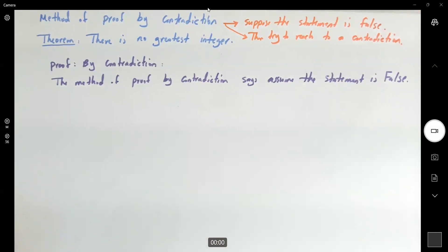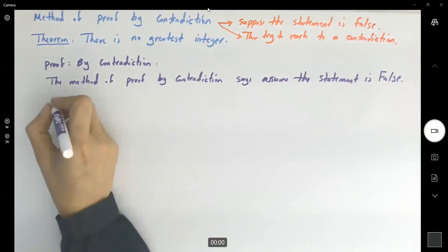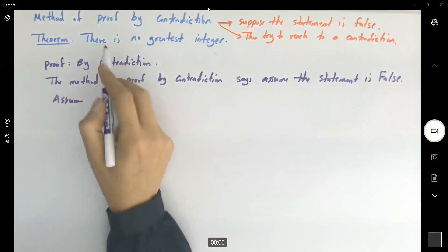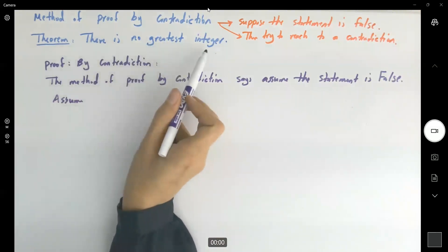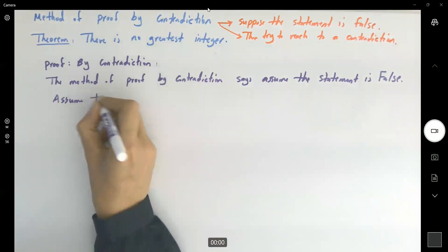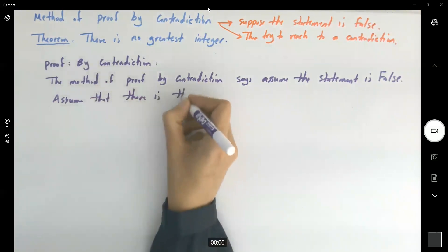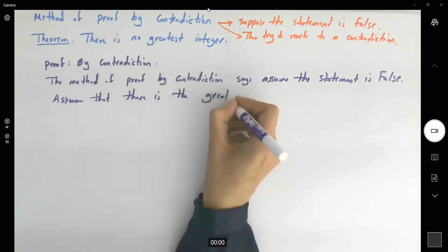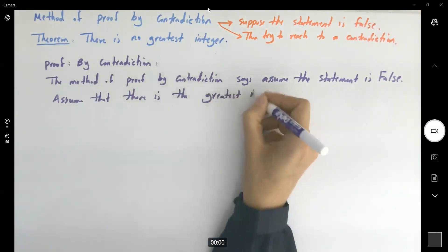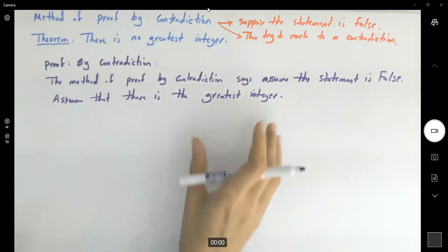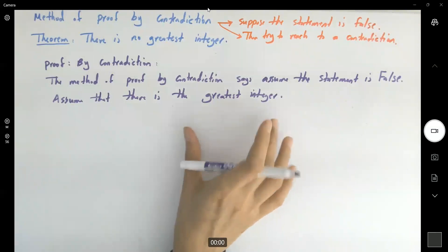Assume the statement is false. What's the meaning of that? It means you can find the greatest integer — assume that there is a greatest integer. I have the integer which is the greatest one. Let us call it N.